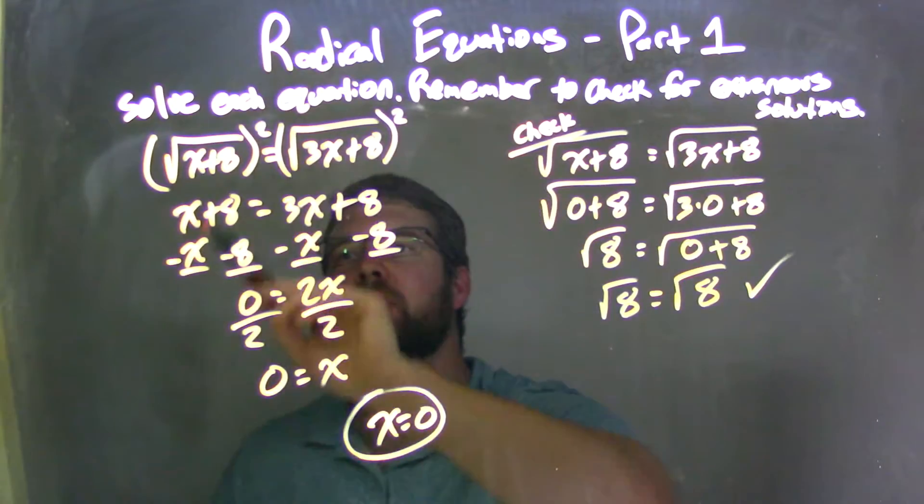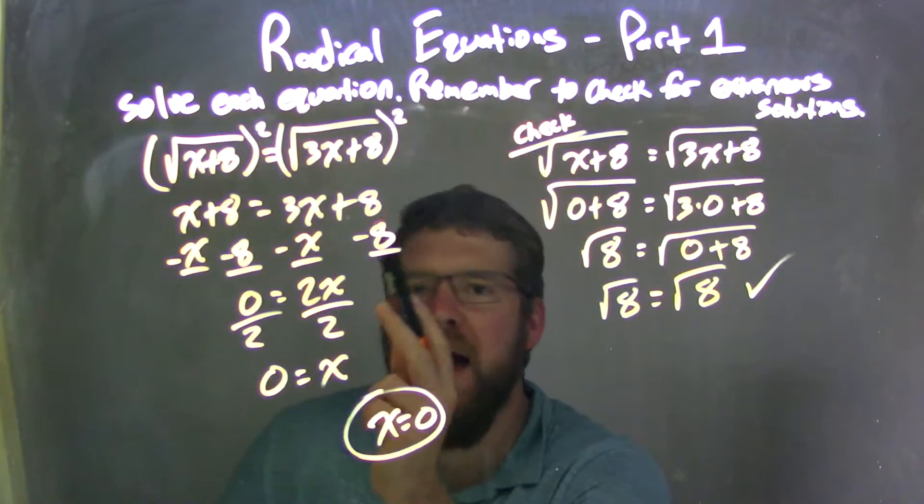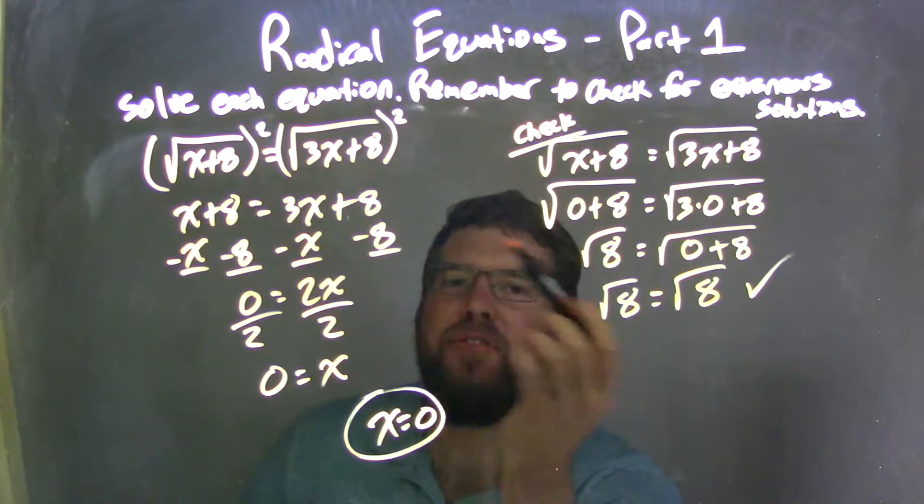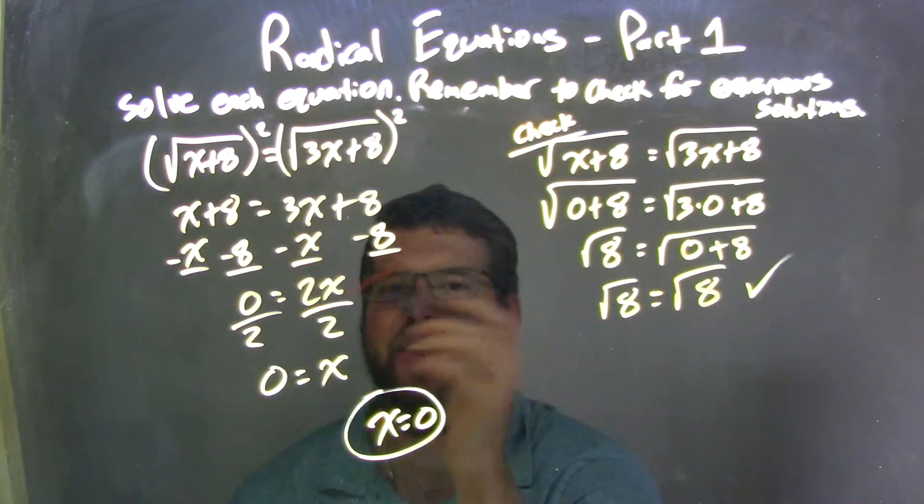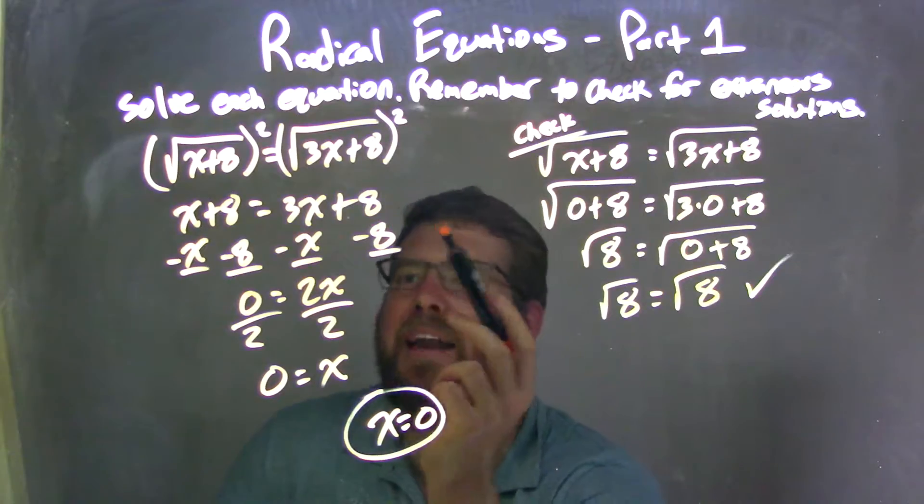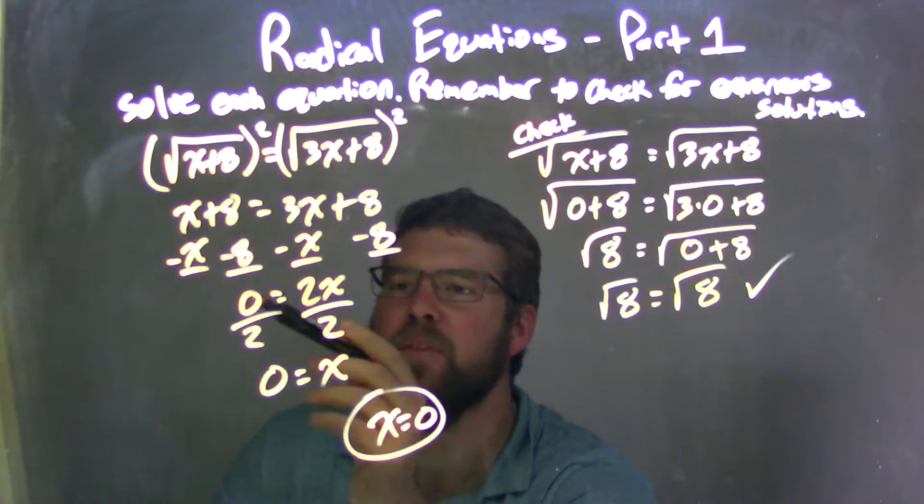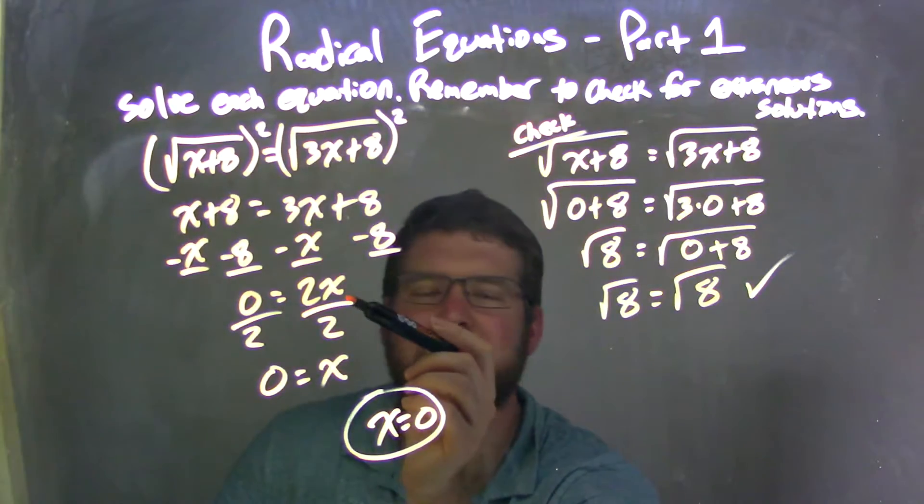But let's recap. We're given the square root of x plus 8 equals the square root of 3x plus 8. Both radicals were isolated on each side of the equation, so I can square both sides here, and I know that both are going to get eliminated. So we're left with just the x plus 8 on the left, and 3x plus 8 on the right. Now I brought my x's to the right, numbers to the left in this case here, leaving me with 0 equals 3x minus x, which is 2x.